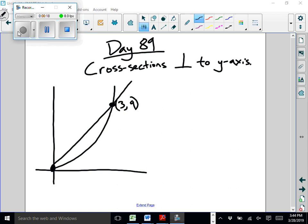Day 88 was about cross sections perpendicular to the x-axis. Obviously when we switch how these cross sections are divided, it's going to change the volume and have to change how we think about it.